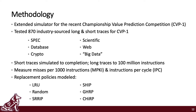To avoid overfitting, we tested our replacement policies on over 870 industry-sourced long and short traces offered for CVP1. Short traces were simulated to completion, and long traces were warmed up and then run for 100 million instructions. We measured misses per 1,000 instructions, or MPKI, and also instructions per cycle, or IPC. Replacement policies modeled were LRU and random — the original TLB replacement policies — and SRRIP, SHIP, GHRP, and of course CHIRP.